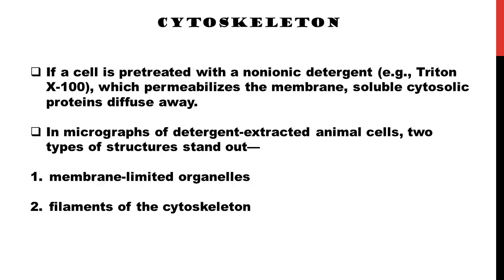Whenever you want to rupture a cell or take materials out of the cells, you have to treat the cells with detergents. Here we are using non-ionic detergents, which will not put or snatch any kind of charge against any protein. They will just solubilize and polymerize the membrane, and cytosolic proteins will be diffusable. After the diffusion process you will get two things: membrane-limited organelles and filaments of the cytoskeleton.